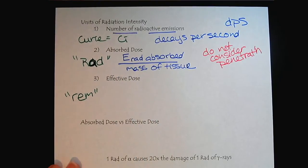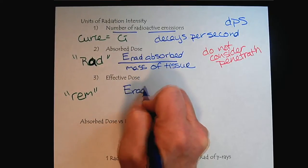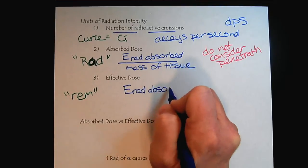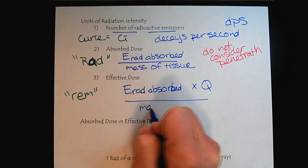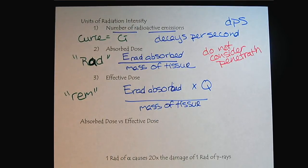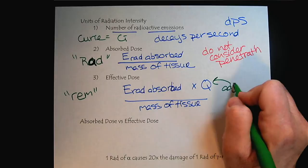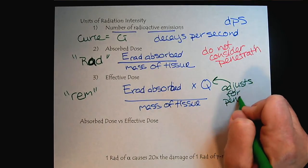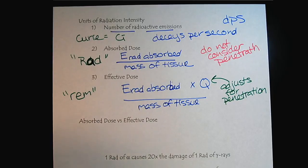And so then that led to this last unit called the REM. We saw that in an earlier tutorial when we were looking at our exposures. This will be the absorbed dose, but we're going to add a second term per mass of tissue. And what this is for, this allows this is the adjustment for penetration. So being exposed to an alpha emitter that's far away versus a gamma emitter. We have this Q factor.